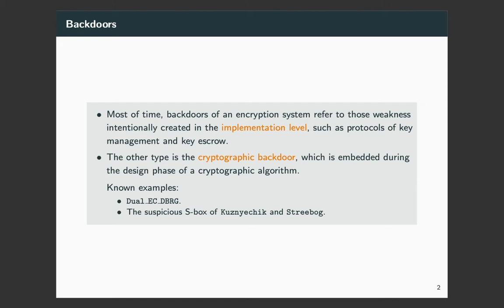However, there are very few known examples of such backdoor algorithms used in reality. Here are two examples. The first one is Dual EC. It is a pseudorandom number generator designed by NSA. It has been verified by Snowden and many other researchers that it has a backdoor inside. The second example is the two algorithms Kuznichik and Strybok, which are selected as Russian standards. Their S-box was proved to have a special structure which was not claimed by the designer, so it might be a backdoor but has not been verified yet.